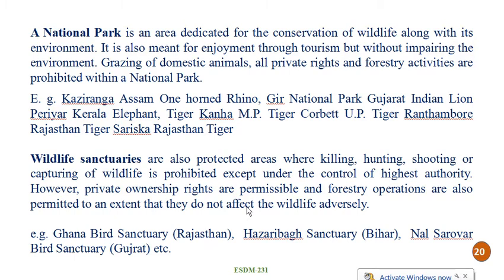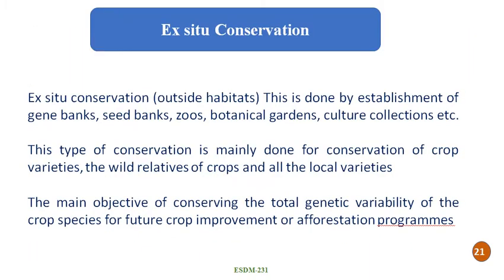Wildlife sanctuaries are also protected areas where killing, hunting, shooting or capturing of wildlife is prohibited except under the control of the highest authority. However, private ownership rights are permissible and forest activities are also permitted to the extent that they do not affect wildlife adversely. This is the basic difference between national parks and wildlife sanctuaries: national parks are totally prohibited areas, while wildlife sanctuaries have some relaxation provided they do not affect wildlife adversely. Some important wildlife sanctuaries in India are Ghanabad Sanctuary in Rajasthan, Hazaribagh Sanctuary in Bihar and Nalsarovar Bird Sanctuary in Gujarat.